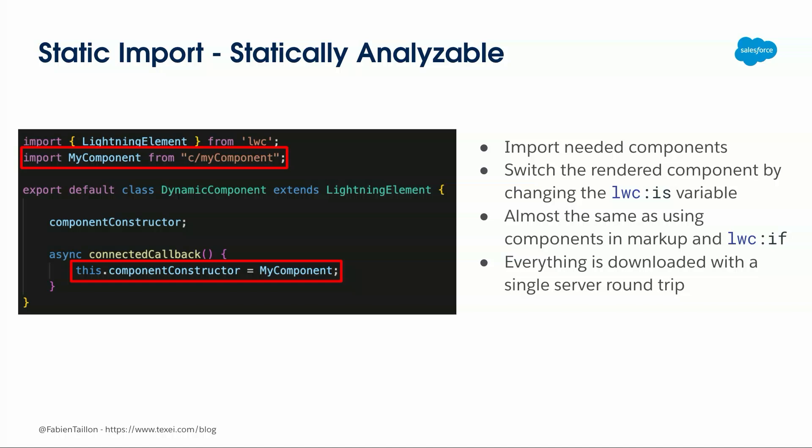Let's see the different ways to instantiate Dynamic Components and what each means for round trips. The first option: you import the component at the top of your file, and somewhere — like in connectedCallback — you just set your component constructor property. This is exactly the same as doing it in markup in terms of round trips. Everything will be analyzed from the top-level import and loaded with the first load of the parent component. So there's no round trip performance issue here.